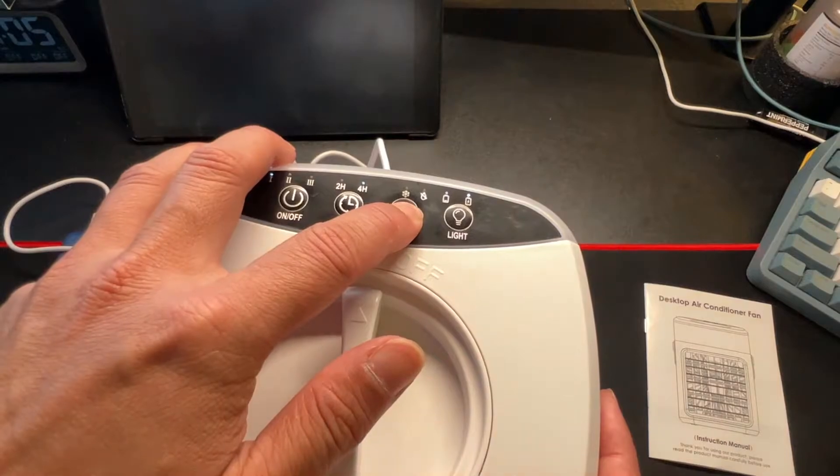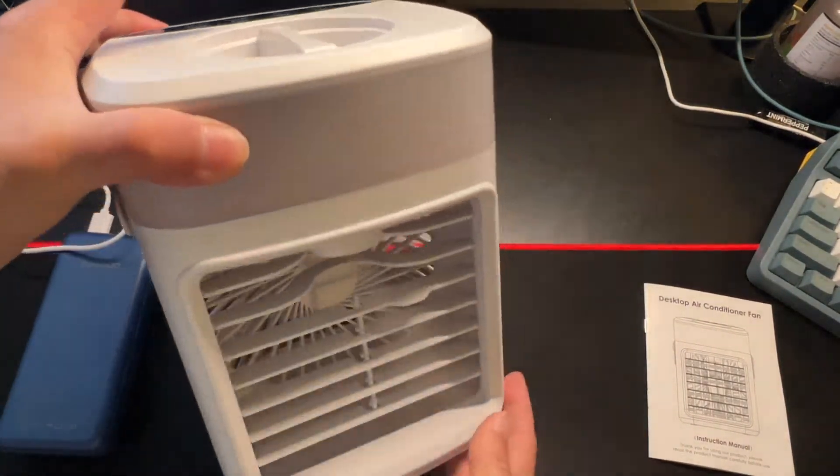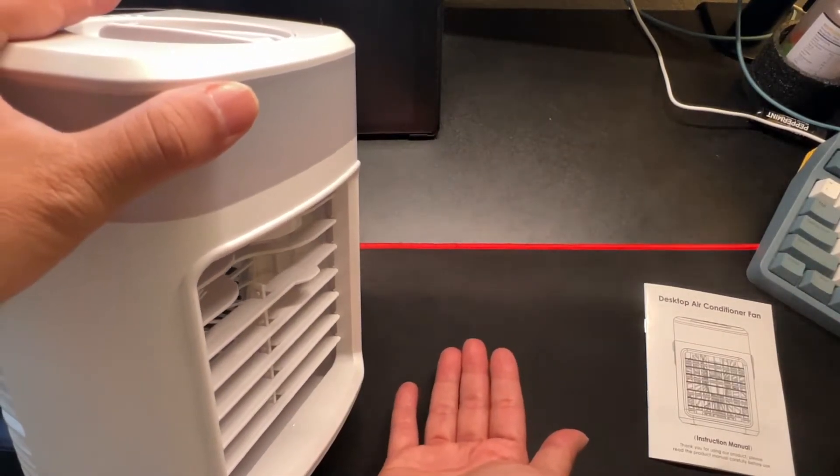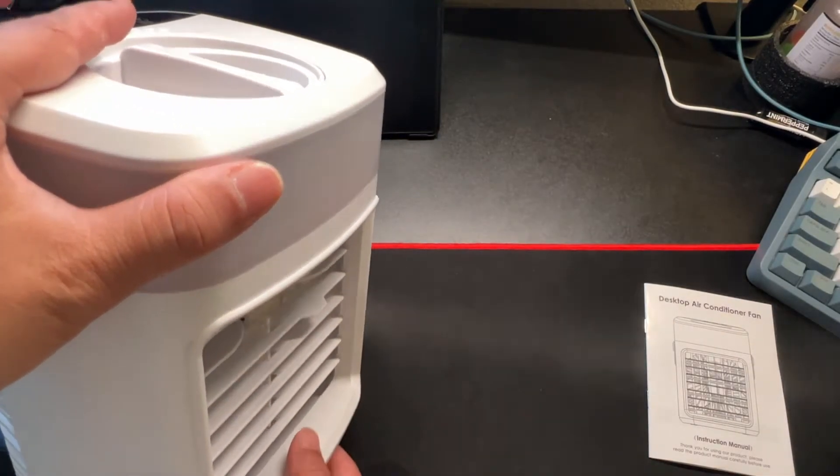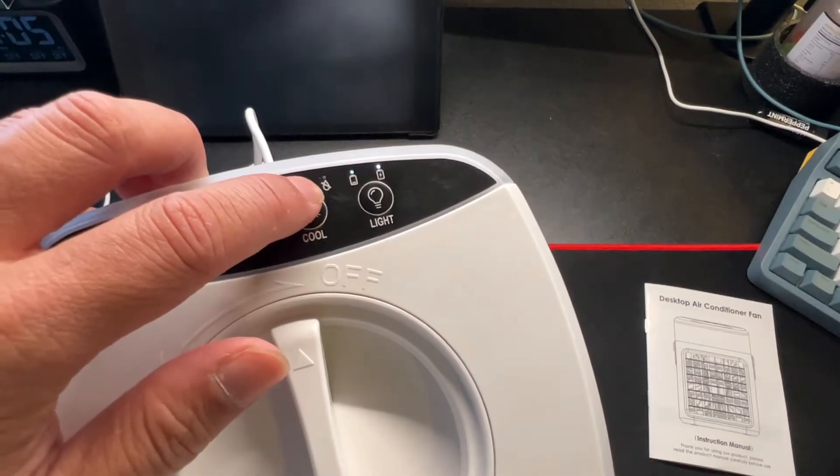The next button will be the misting button. You can see it's misting. It will have a protection so when you run out of water you'll see this light blinking.